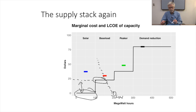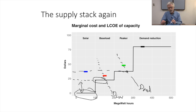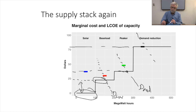In higher demand periods, we would tend to bring on more expensive units — this is medium demand. During these periods, the price will be set by the peaker unit. In the very highest demand periods, when we have demand reduction as our marginal resource, the price is set by the demand reduction resource, and all of the other types of generation are earning scarcity rents.